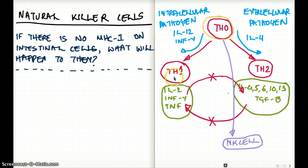T helper 0 is converted to T helper 1 when there is an intracellular pathogen. Intracellular pathogen stimulates the production of T helper 1 cells. And this is achieved by two cytokines, IL-12 and interferon gamma. So remember these two cytokines, they're important, IL-12 and interferon gamma.